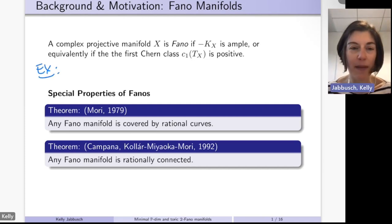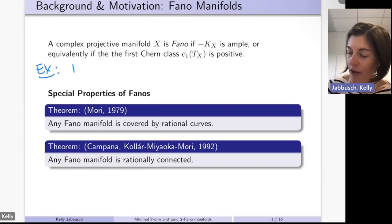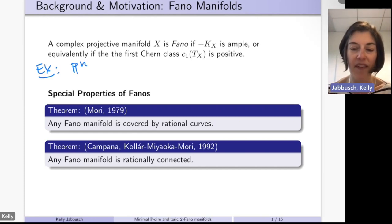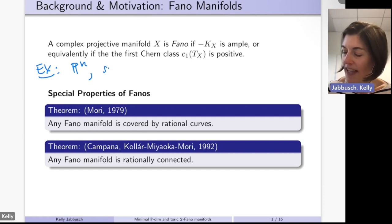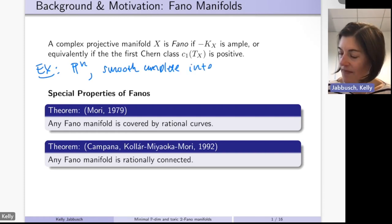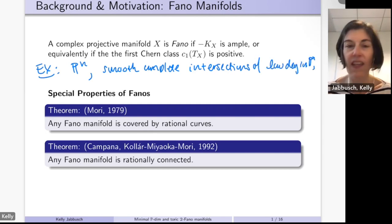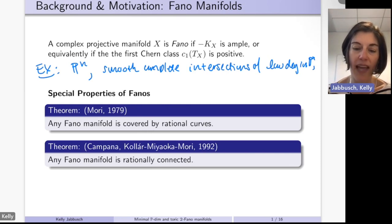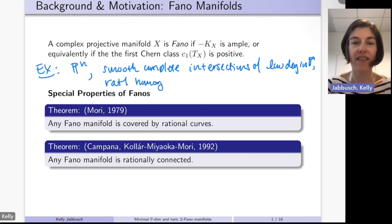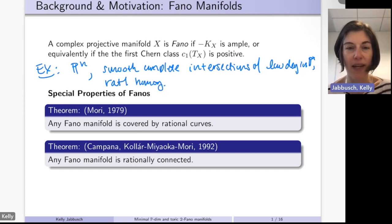Some first examples of Fano manifolds: projective spaces are Fano. Smooth complete intersections of low degree in projective space are also examples. Additionally, rational homogeneous spaces are examples of Fano manifolds.